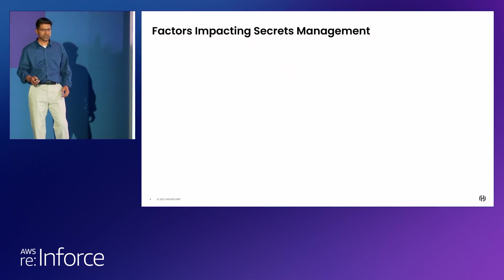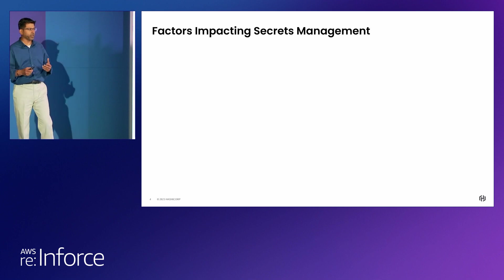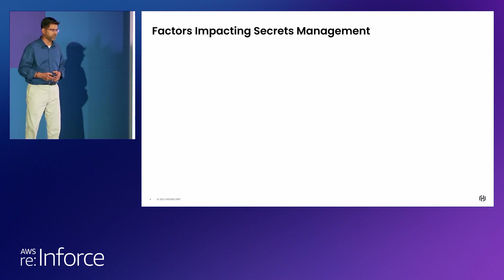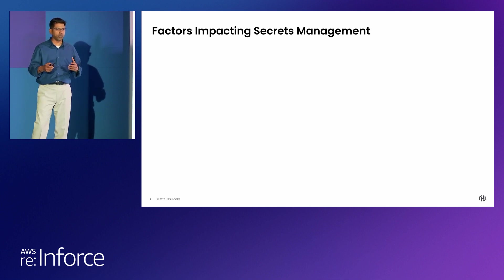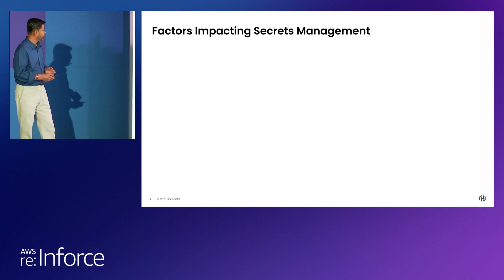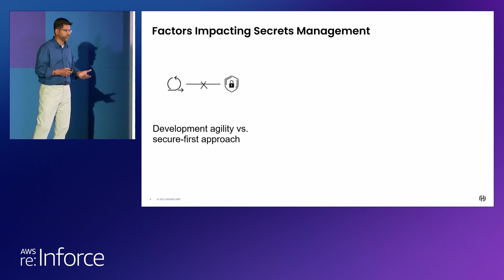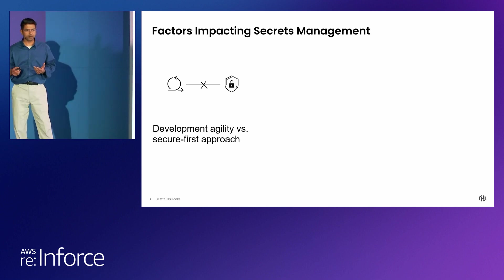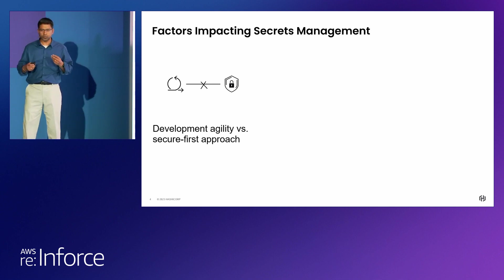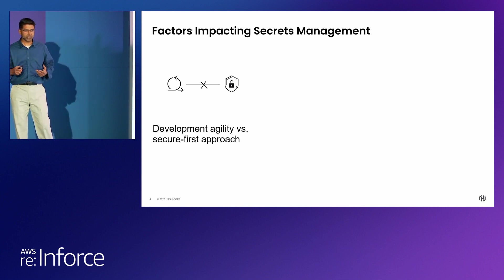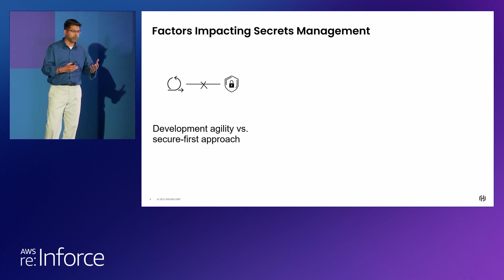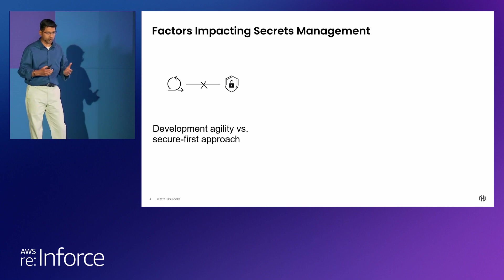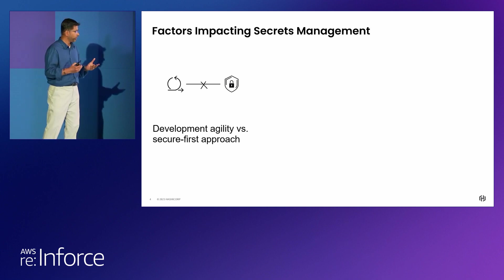As we get started, let's talk about what are the factors that impact secrets management, especially if we take modern cloud-native app deployments. First is development agility versus a secure-first approach. What do I mean by that? When developers want to deploy their code quickly, naturally in the interest of time, sometimes they may have their secrets in their source code — could be a static secret.